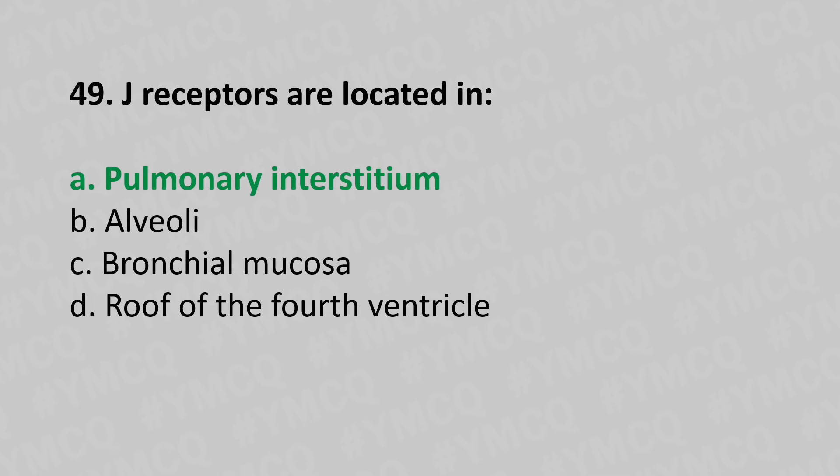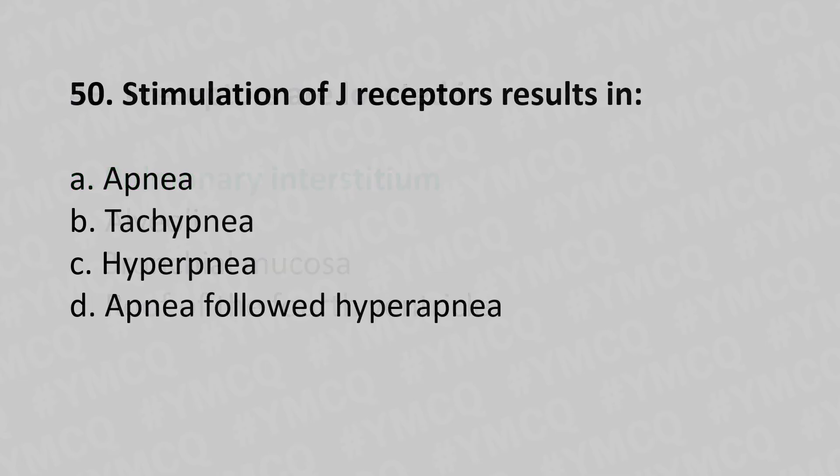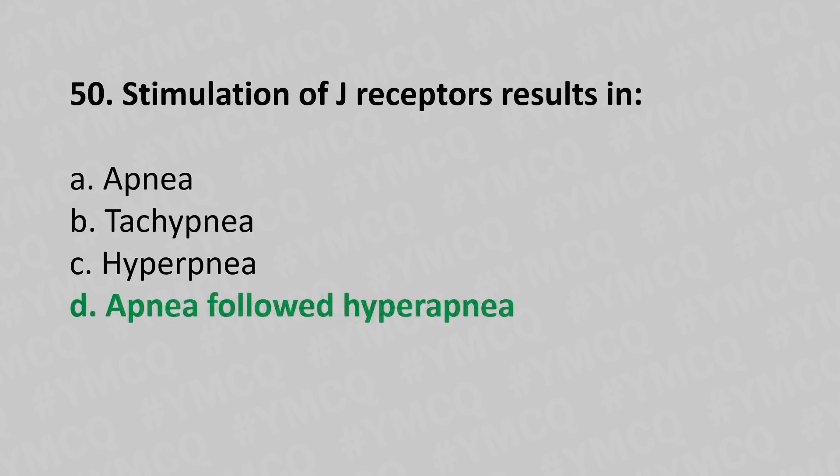Now let's move to question number 50. Stimulation of the J receptors results in. Option A: Apnea. Option B: Tachypnea. Option C: Hyperpnea. Option D: Apnea followed by hyperpnea. And the answer is Option D, apnea followed by hyperpnea.